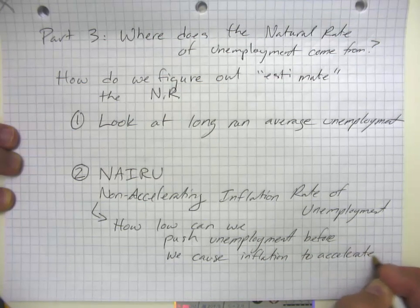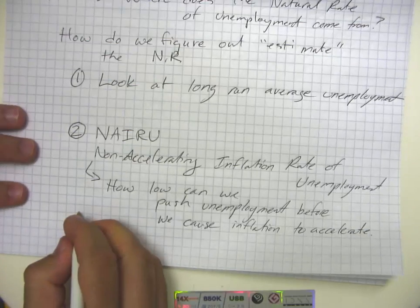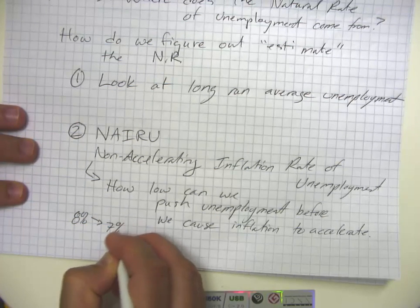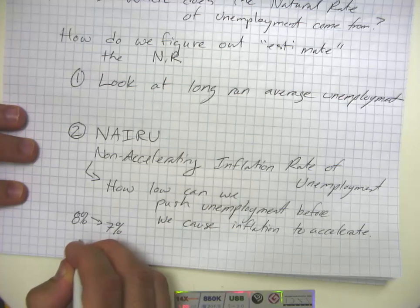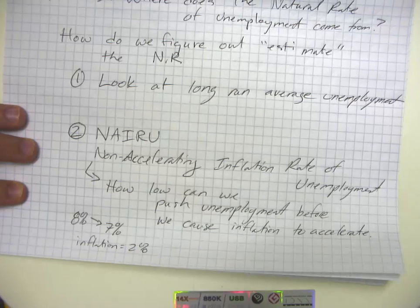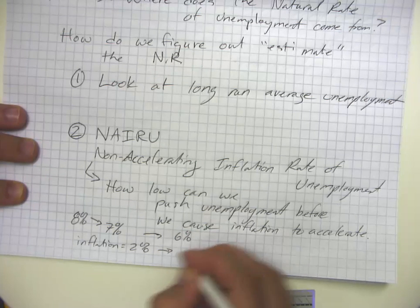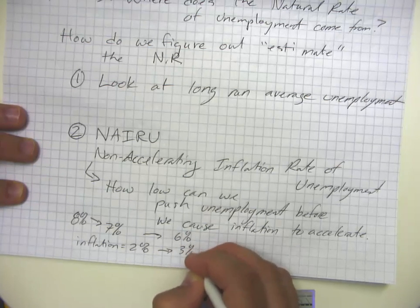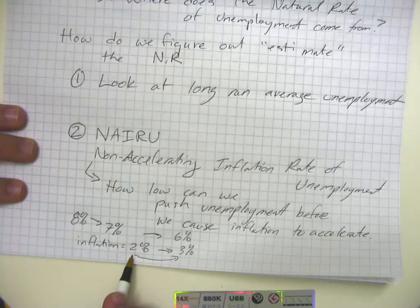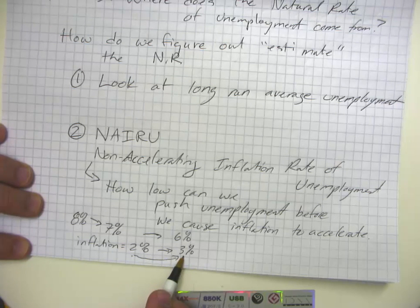Notice we use the word 'accelerate' rather than 'occur.' The idea is that we might push unemployment from 8% down to 7% and inflation stays at 2% the whole time. But then maybe when we push unemployment down to 6%, inflation goes up to 3%. So this is the acceleration of inflation — not just that inflation is happening at 2% per year, but that it's happening at a faster pace, 3% per year.